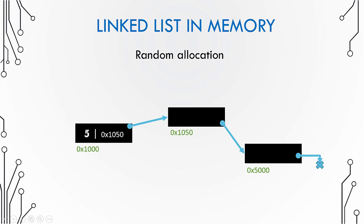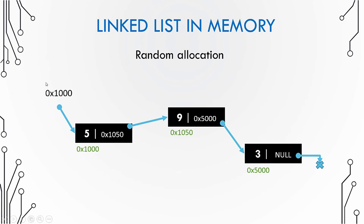The first node's data part stores the value and its link stores the address of the next node. The second node similarly has data and the address of its next node. The last node points to null. We have a head pointer that stores the address of the first node. To go to the second node, you go to the first node, then follow the link to jump to the second node.